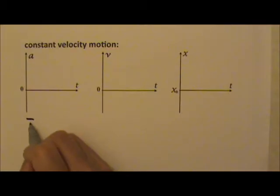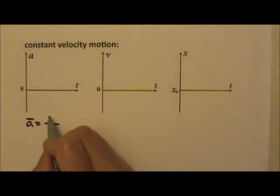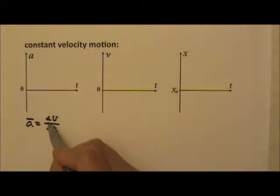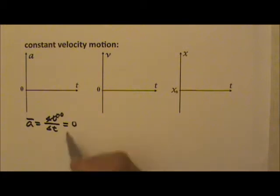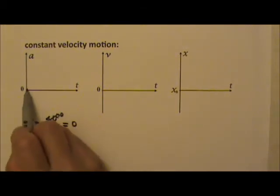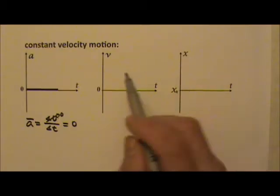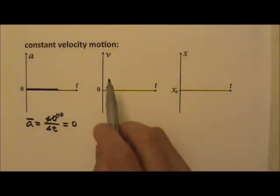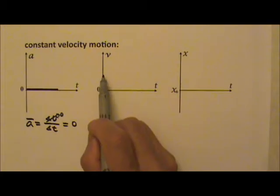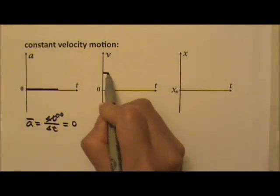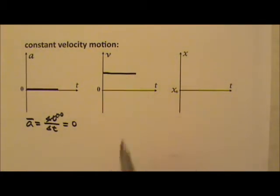Because the average acceleration is Δv over Δt, with constant velocity the velocity doesn't change, so Δv is zero. That means the average acceleration is zero — acceleration will be zero the entire time. So velocity doesn't change; it stays the same value the entire time. If the velocity is positive, the velocity graph is a flat horizontal line.